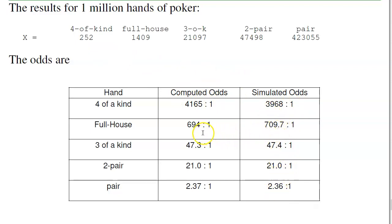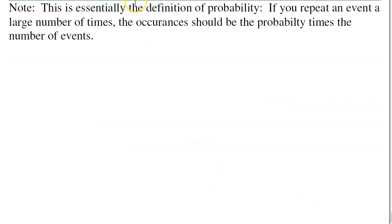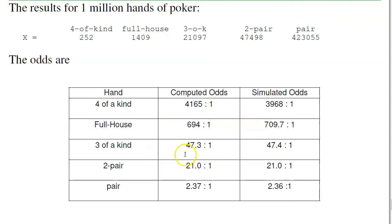Notice this is close — not exact — but close to the computed odds. That essentially is the definition of probability: if you repeat an event a large number of times, the occurrences should be the probability times the number of events. For example, for a million hands of poker, I should get three of a kind 1 out of every 47.3 times. That's what I got — three of a kind 21,000 out of a million times. So that's combinations and permutations.